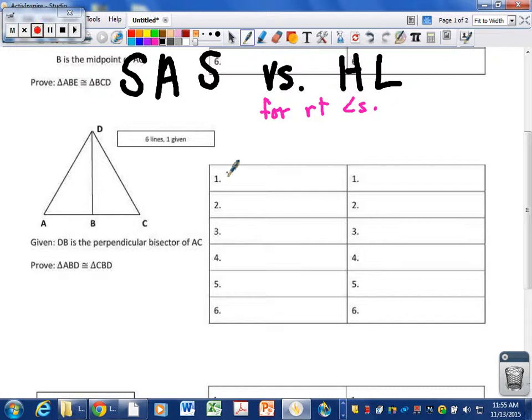DB is the perpendicular bisector of some other side, AC. And of course you should write it out verbatim, word for word, but because my screen is so tiny I'm just going to write this down. It is given to us, that is our given information.